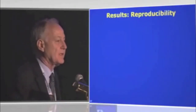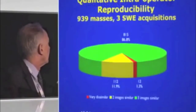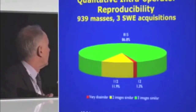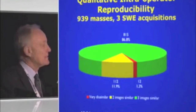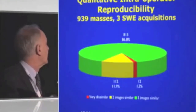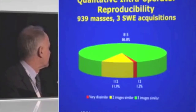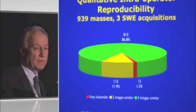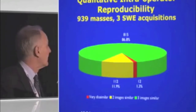Here are the results. First, the qualitative interoperator reproducibility on all 939 cases. The vast majority had images very similar to each other. Taking the very similar and similar categories together, it's almost 87% showing very high reproducibility.